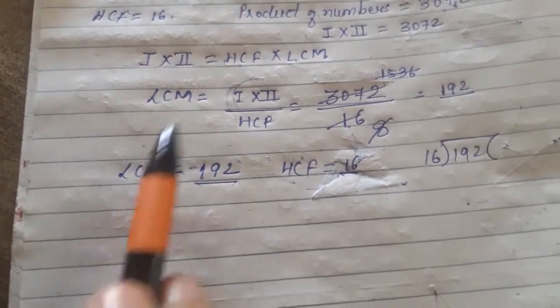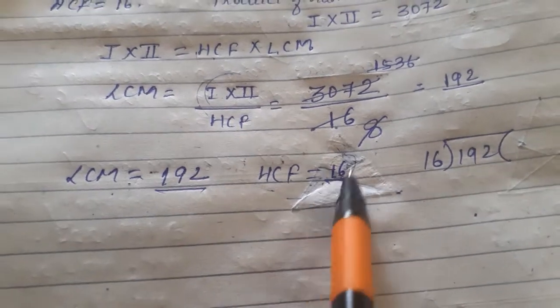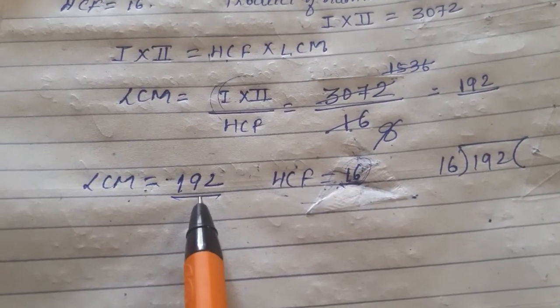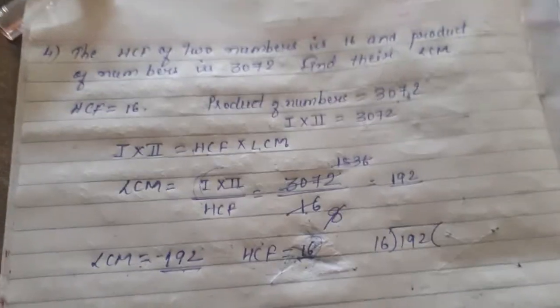LCM should always be a multiple of HCF. Means if we have HCF like 16, multiply 16 by something, we should get answer 192. If we divide 192 by 16, our division should be complete. Okay.